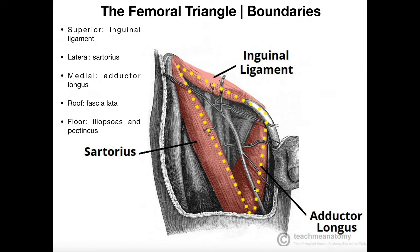The medial border is the adductor longus muscle, one of the adductor group muscles — we'll go into more detail on those later. These are the three major boundaries in the frontal plane. We also have a roof, which is basically some tissue that goes over the anterior surface. In this image the roof has been pulled off, and the floor exists in the back.